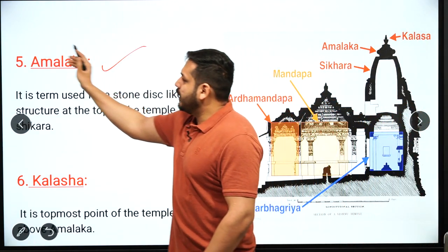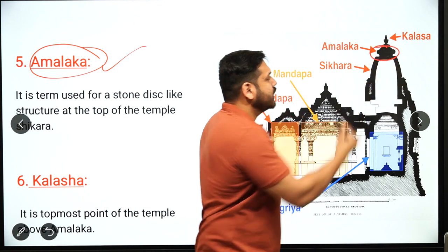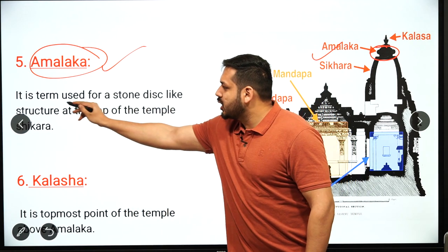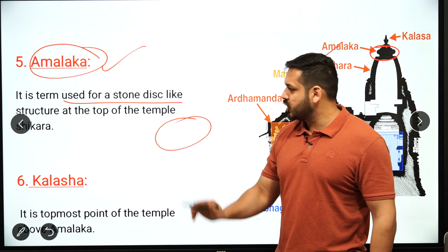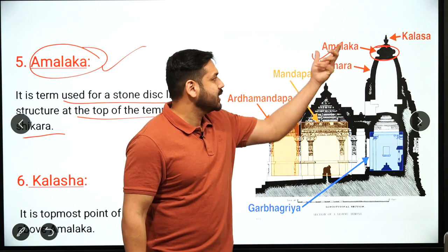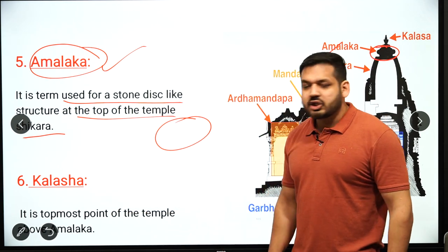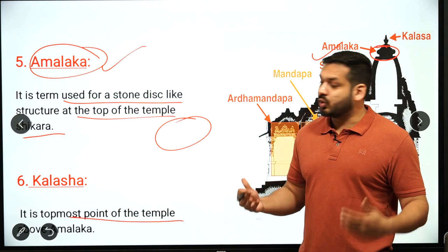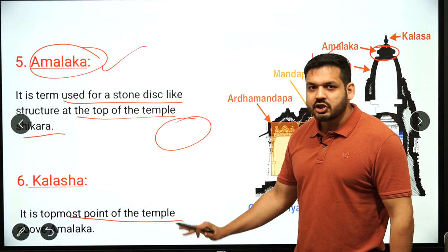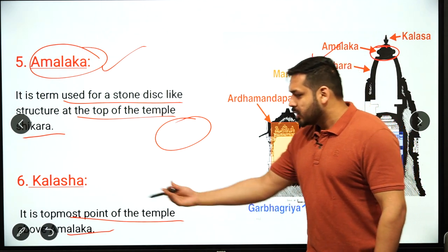The fifth feature is Amalka — a disc-shaped stone structure located at the top of the Shikhar. It is a stone disc-like structure placed at the top of the temple tower. Just above the Amalka is the sixth feature, Kalash, which is the topmost point of the temple. Remember: Amalka is below Kalash; Kalash is the very top-most point of a temple.